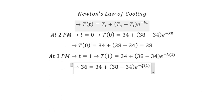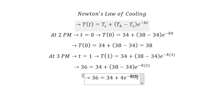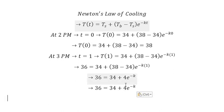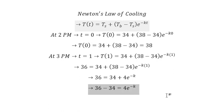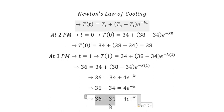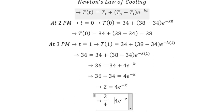Now we can find the value of K. We have: 36 minus 34 equals 4 times e to the negative k. We move 34 to the left, giving us 2, and then we divide both sides by 4, giving us one over two on the right side.